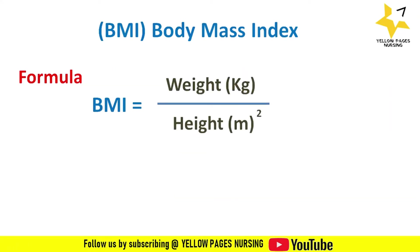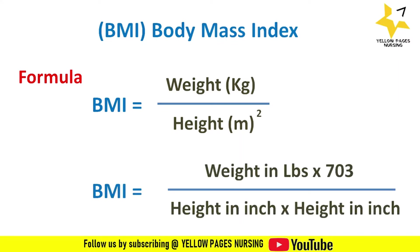How do we calculate body mass index? The formula is: BMI equals weight in kilograms divided by height in meters squared. This formula is used when weight is expressed in kilograms and height in meters. If weight is expressed in pounds and height in inches, the formula is: BMI equals weight in lbs multiplied by 703, divided by height in inches multiplied by height in inches.